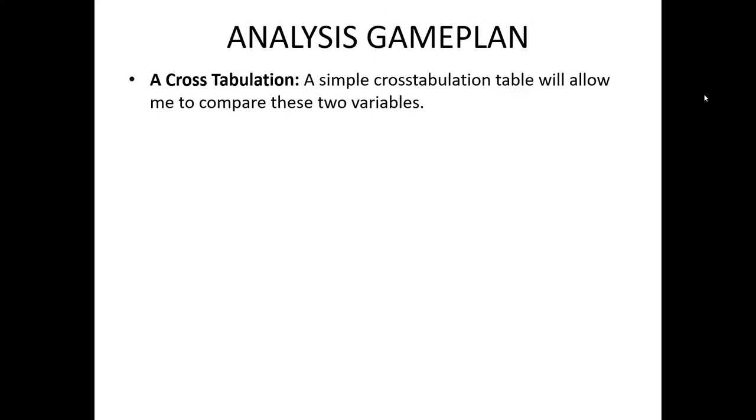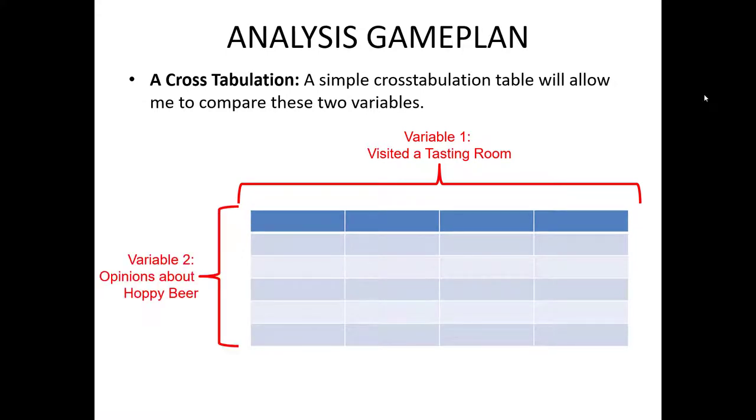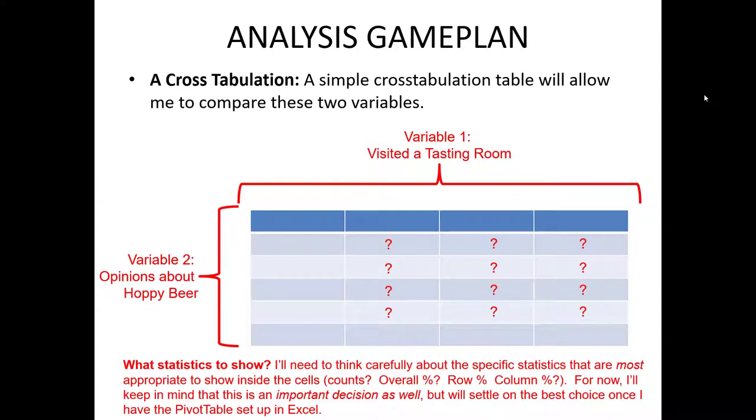So our cross tabulation here is going to allow us to compare these two variables. So when we make our cross tab, we know that one of our variables is going to be if they visited a tasting room. And our other variable is going to be opinions about hoppy beer. And then we're going to need to report some sort of statistical values that are most appropriate for our research question inside the cross tab.